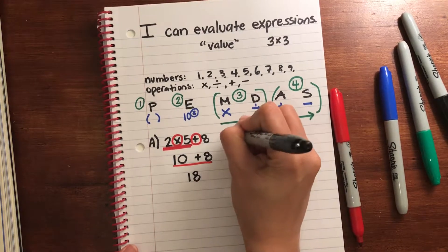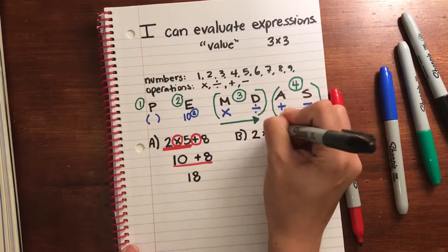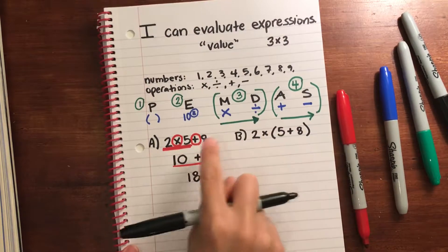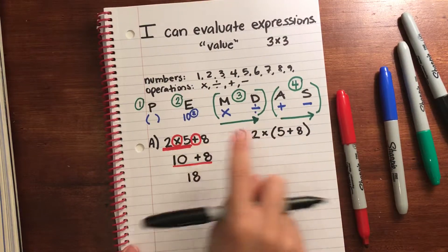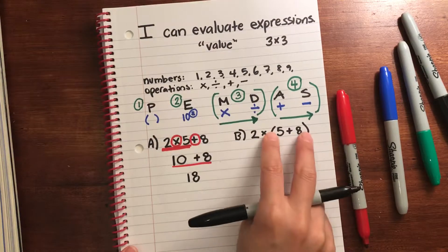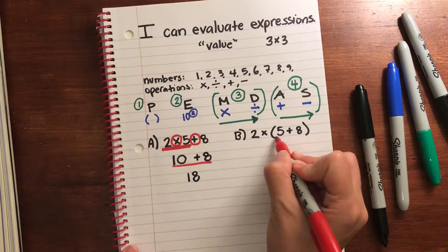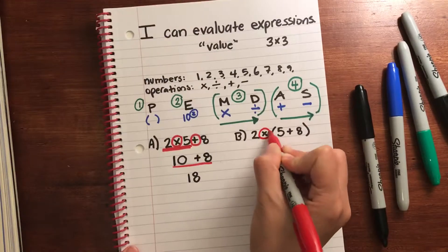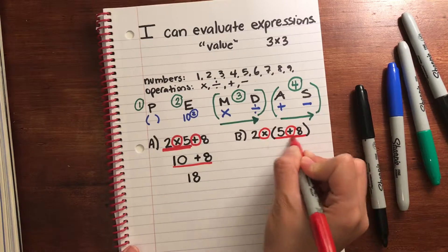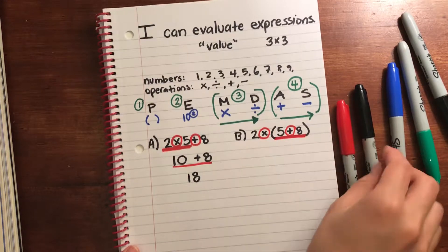Let's look at B. 2 times 5 plus 8. Now if you'll notice, 2, 5, 8, times, plus, everything is identical except for the fact that this has parentheses. Now since it has parentheses, following the order of operations, I know I have to solve for this first. So look at the operations. I have multiplication, addition, same thing. But now this expression is telling me to solve this first because it's in parentheses. 5 plus 8 is 13.